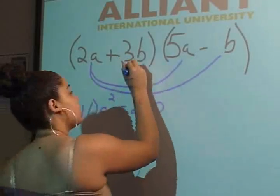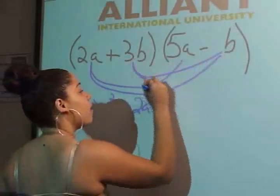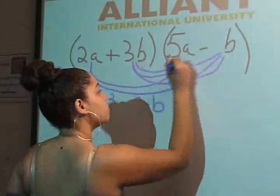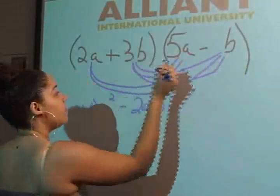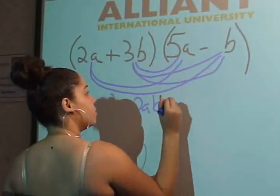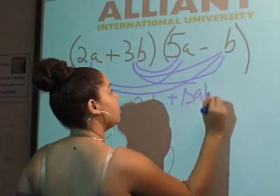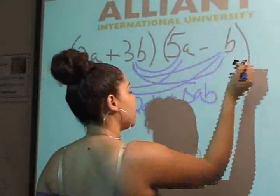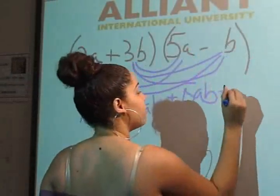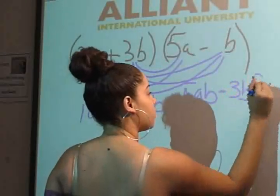Now we're going to look at this one right here and distribute out. 3b times 5a gives you a positive 15ab. And now 3b times negative b gives you a negative 3b squared.